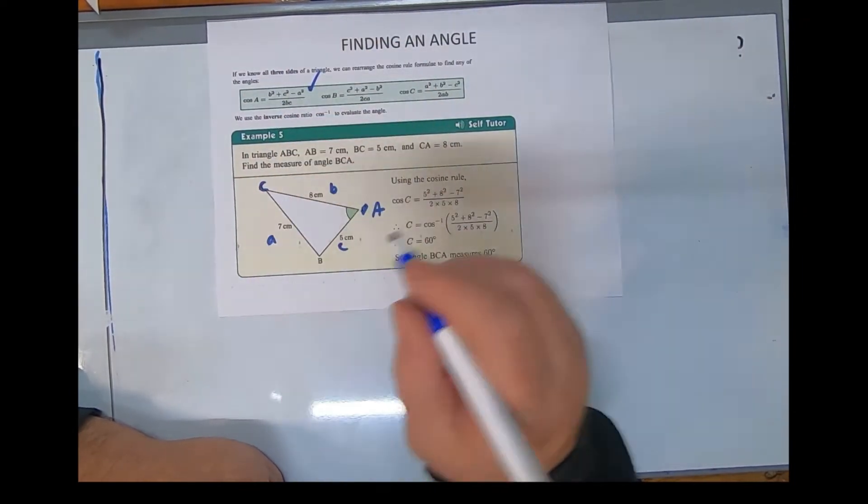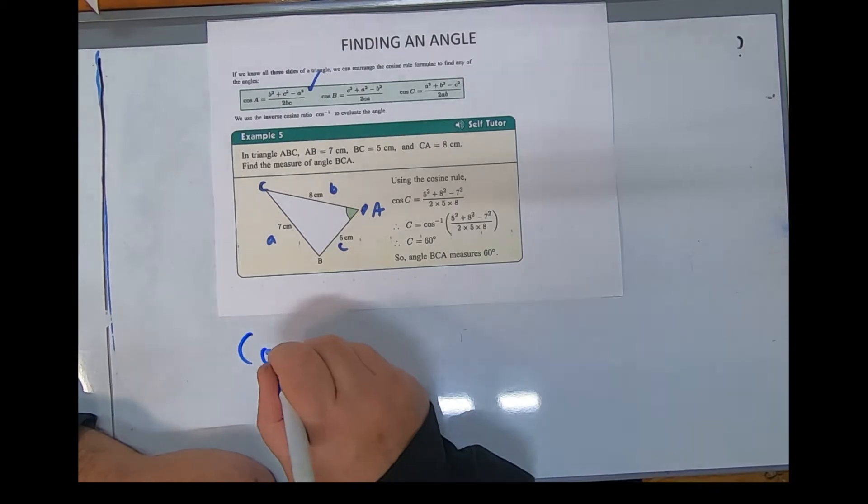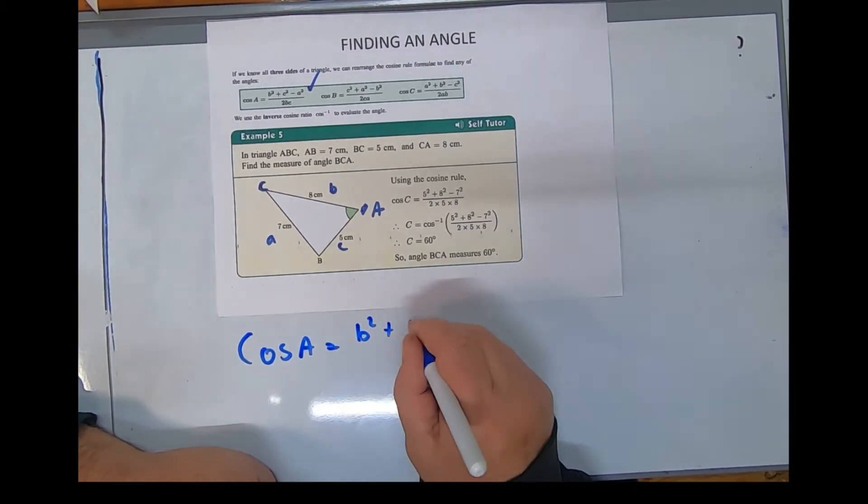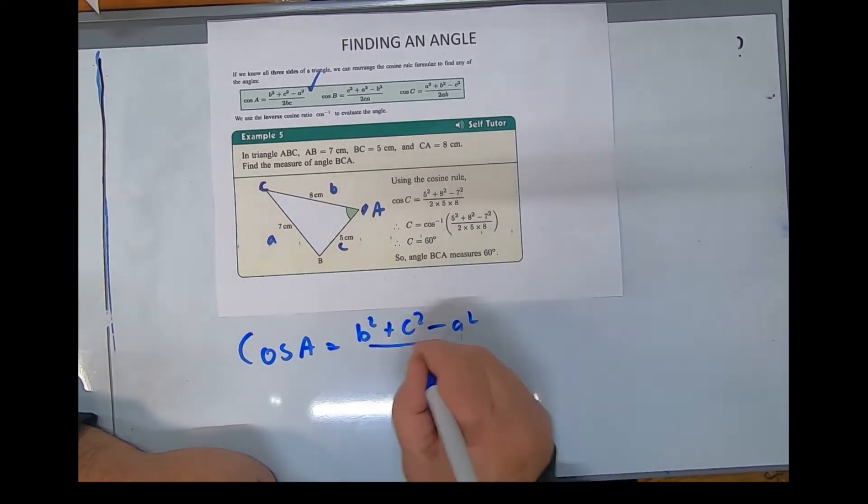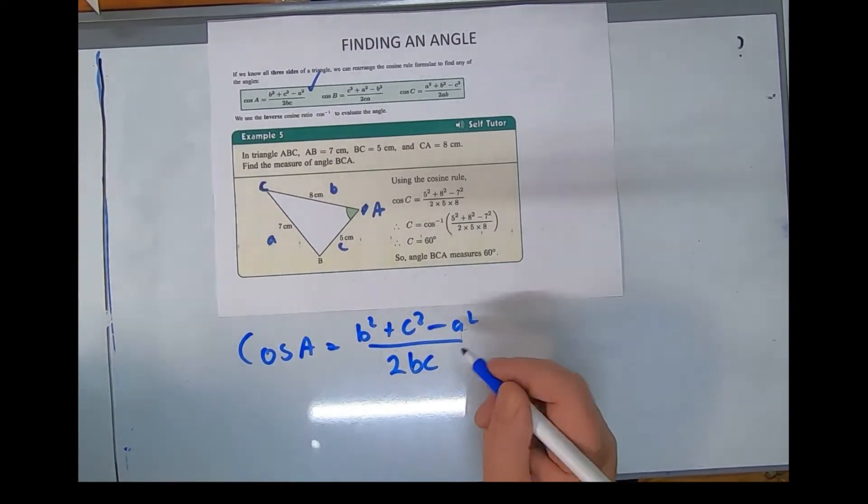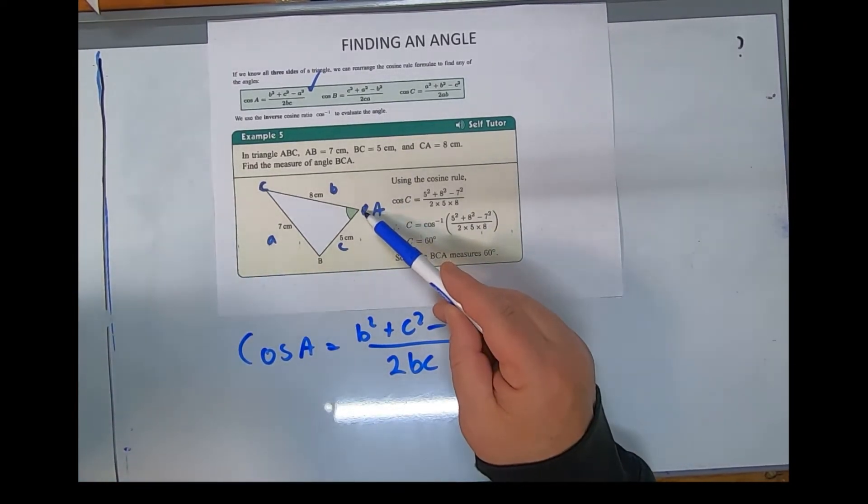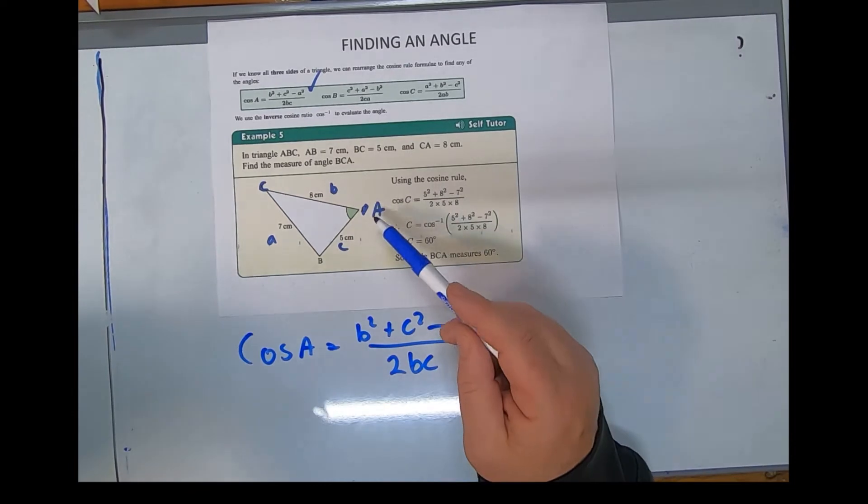cos A = (b² + c² - a²) / 2bc. Just to explain one last time: you're in charge of putting the labels on, no problem with rearranging the answer at the end.